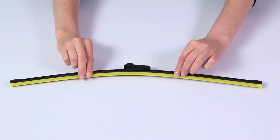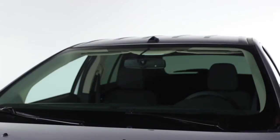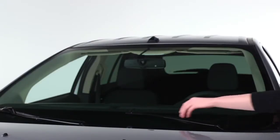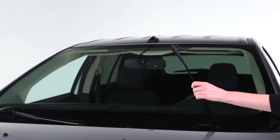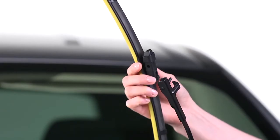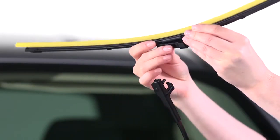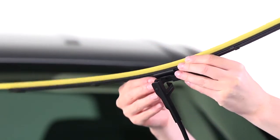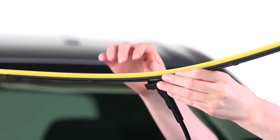You're now ready to install the blade. After you've removed the old wiper blade, make sure the wiper arm is in the up position. Then, position the wiper blade so that it's perpendicular to the wiper arm. Insert the wiper arm peg into the hole of the connector.